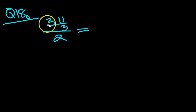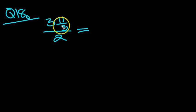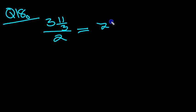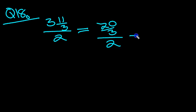3 and 11 thirds divided by 2. Let's convert this to an improper fraction. 3 3's are 9, and 9 plus 11 is 20. So this is 20 thirds, all divided by 2.